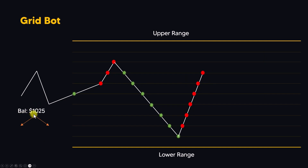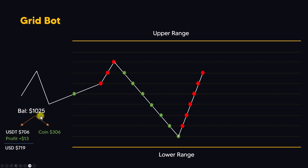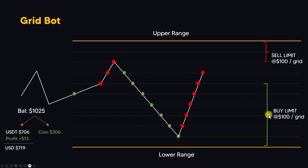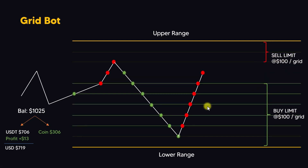Then the balance will increase to 1025 dollars, with some coins sold and added to USDT. The total profit is plus 13 dollars, making 1025 dollars total. After selling, the bot will fill the empty grids with buy limit orders again. I hope you now get the idea of how grid bot works.